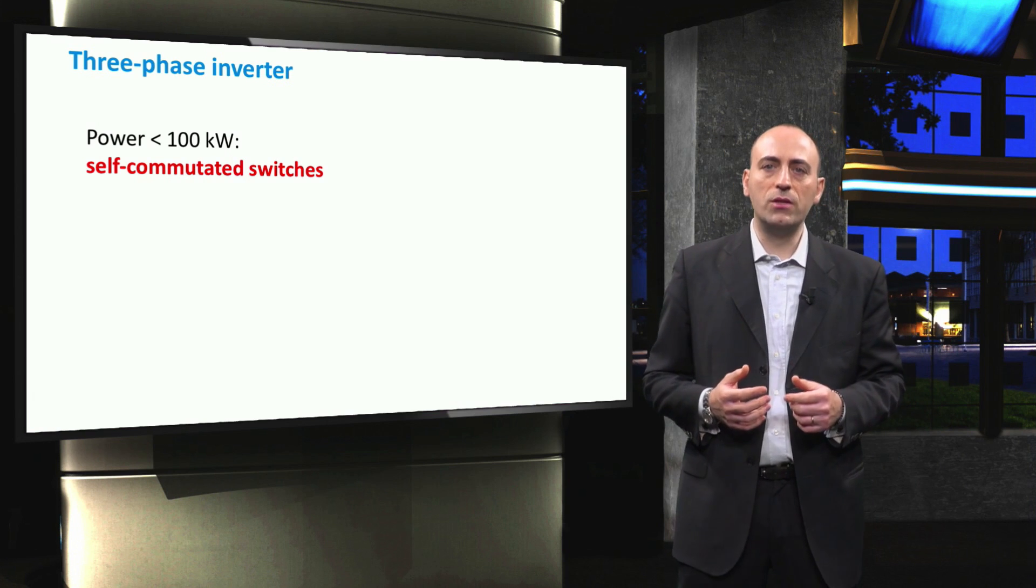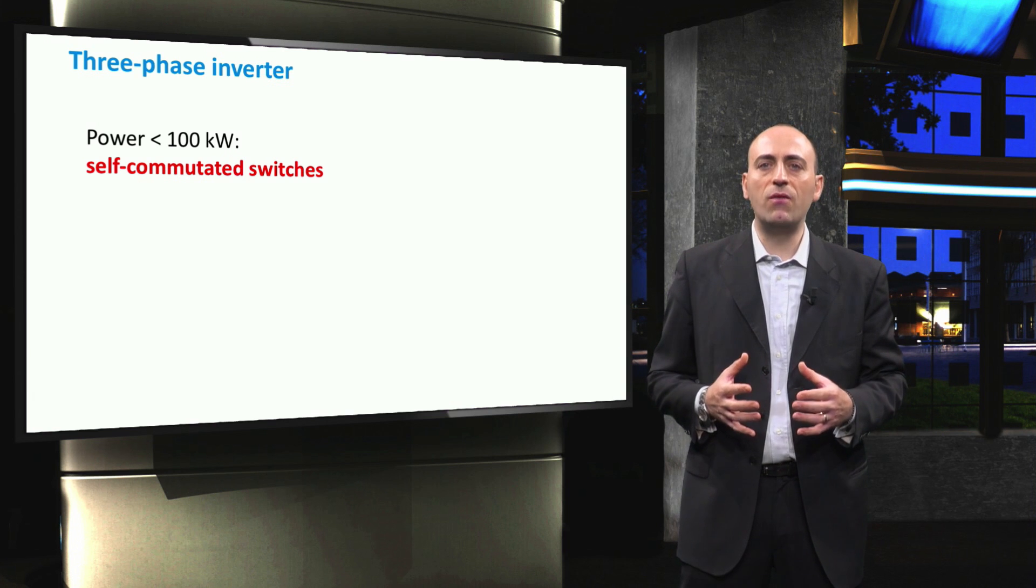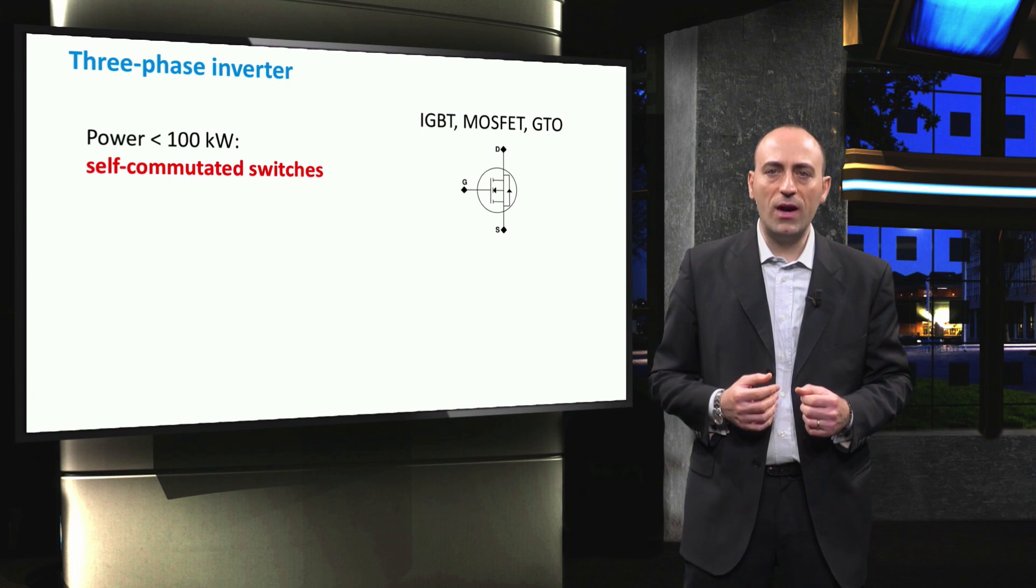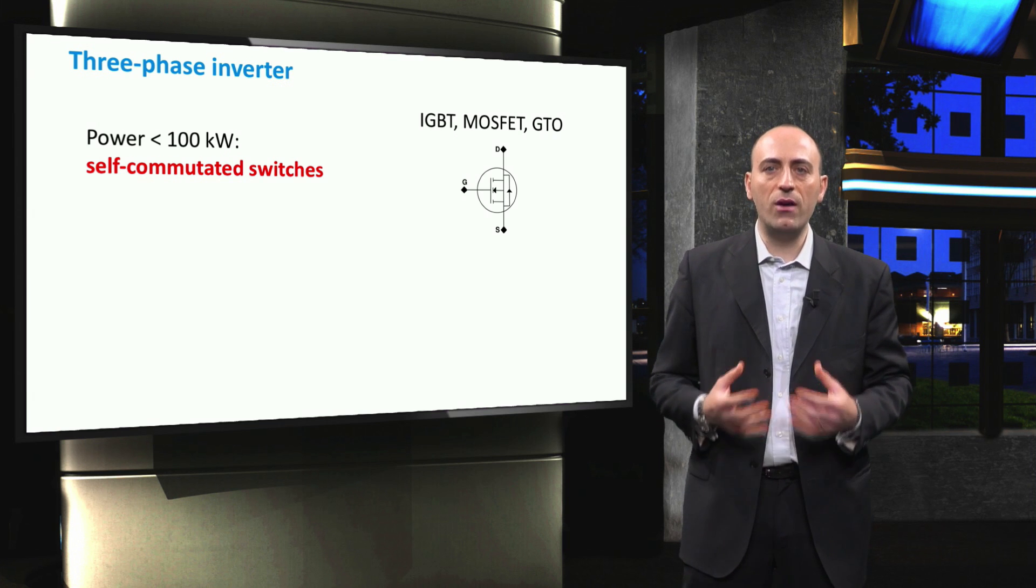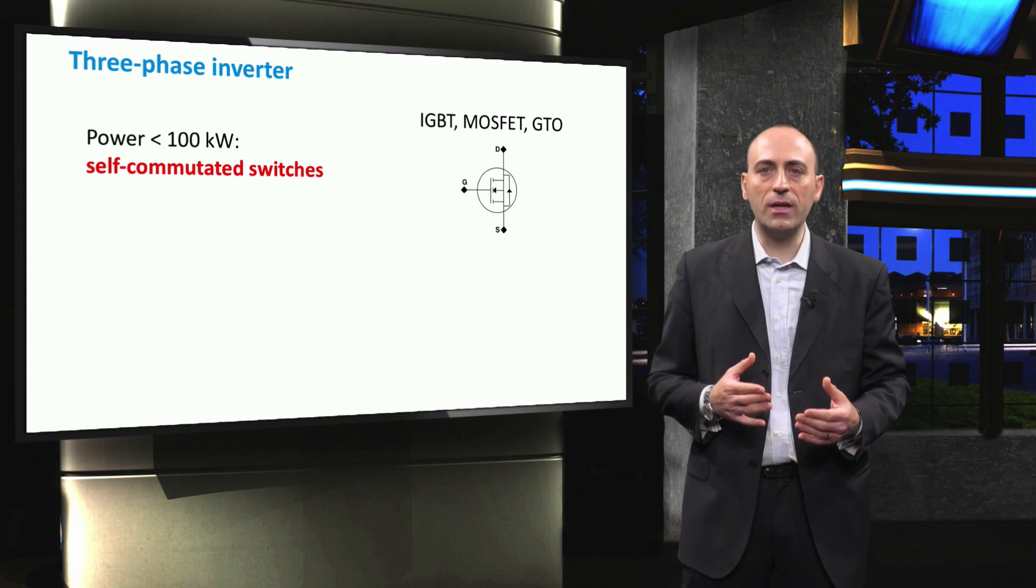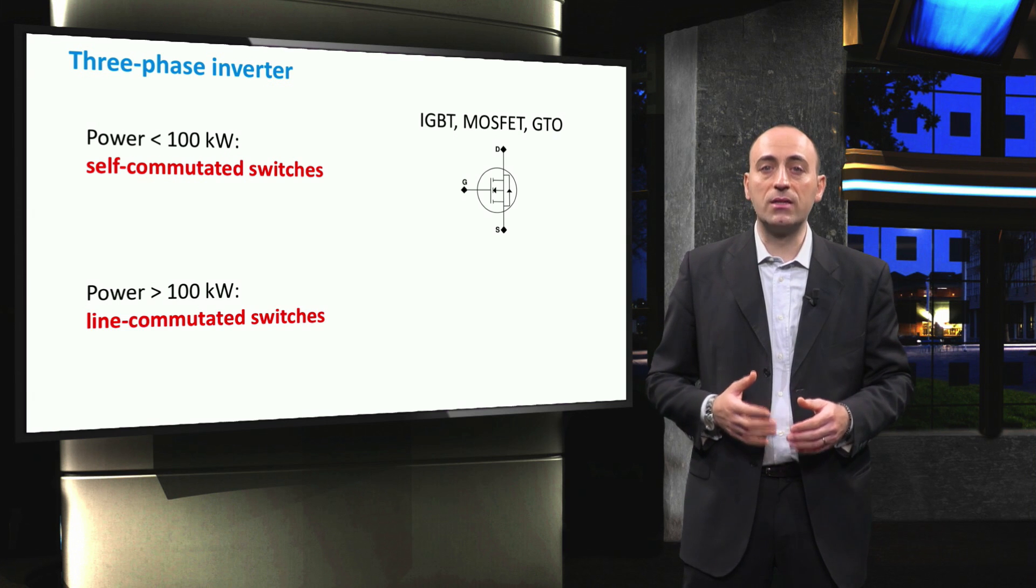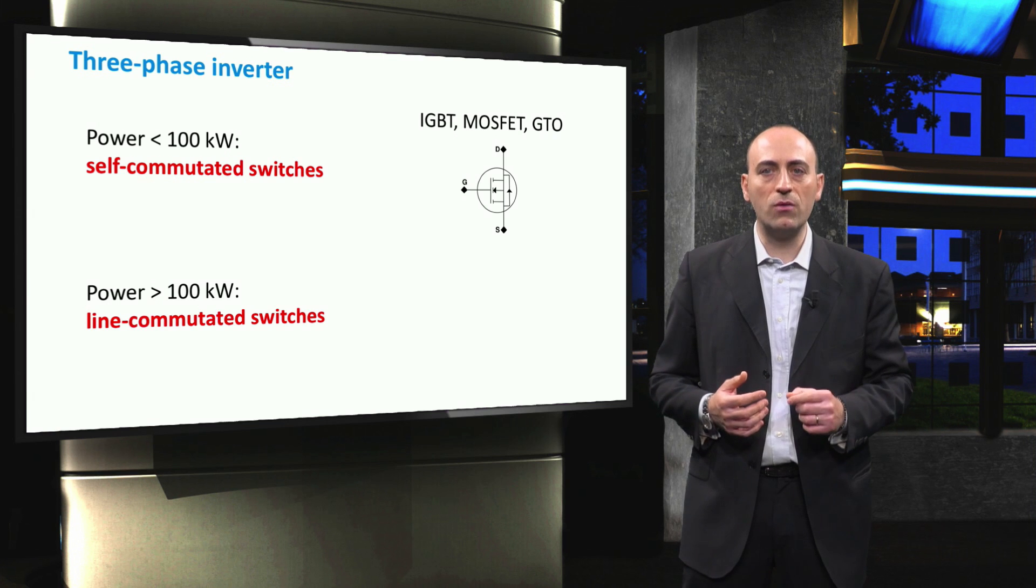If the power converted from DC to AC is less than 100 kW, the switching devices used are usually self-commutated ones. Among these devices we can mention the IGBT, the MOSFET and the GTO. These devices are characterized by very fast switching and feature a controller that takes care of the opening and closing of the transistors. When it comes to power ratings higher than 100 kW, line-commutated semiconductor devices, such as Thyristors, are used.